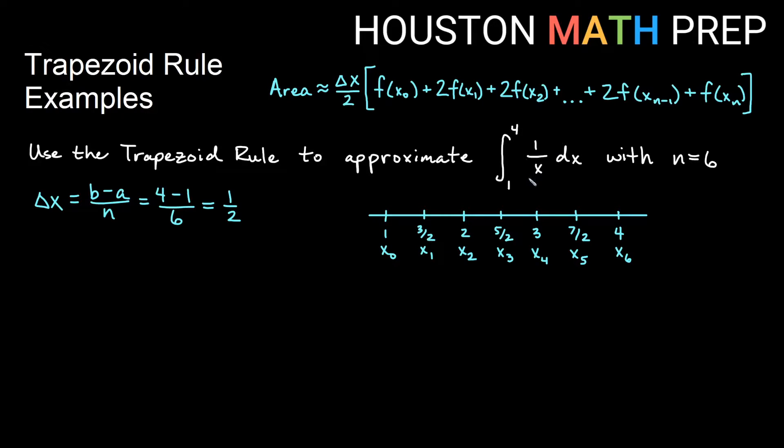So these are all of the x values I need to plug into my original function to get the y values that I need to use in the formula. So remember that my function is going to be 1 over x that I'm plugging into. So if x₀ is 1, then that means my f of 1. And this is just a reciprocal function, 1 over x. The reciprocal of 1 is 1.